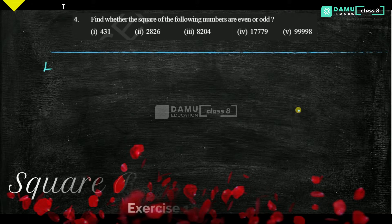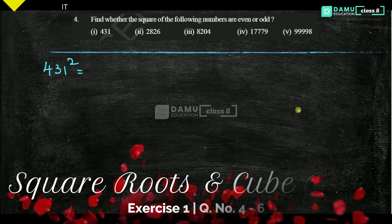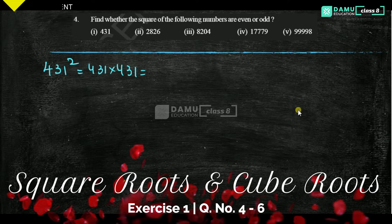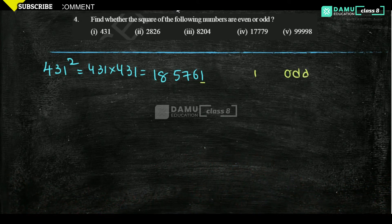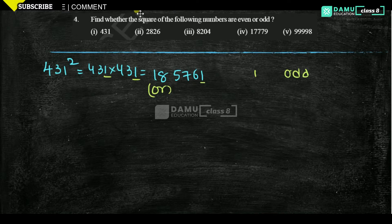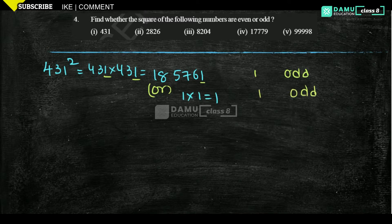Let's take 431. The square of 431 is 431 into 431, which gives 185761. What is the unit digit here? 1. And 1 is odd. Another method: just take the unit digits, which are 1 and 1. Then 1 into 1 gives 1. So the answer is also odd.